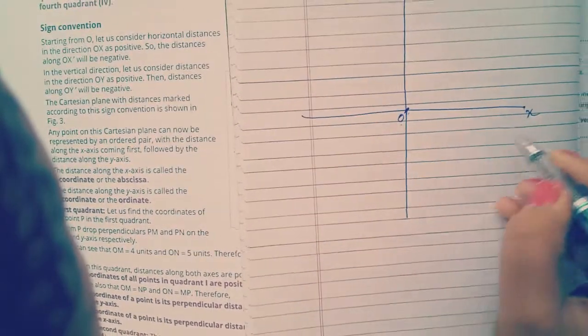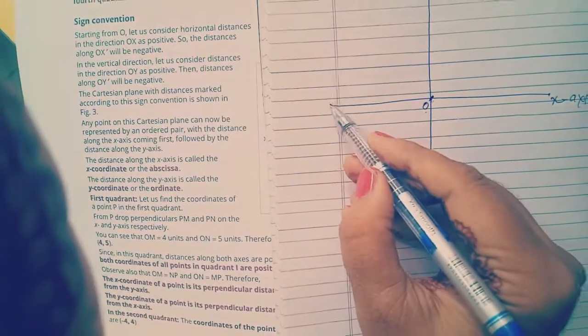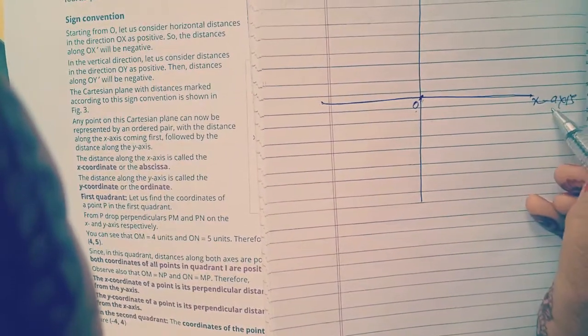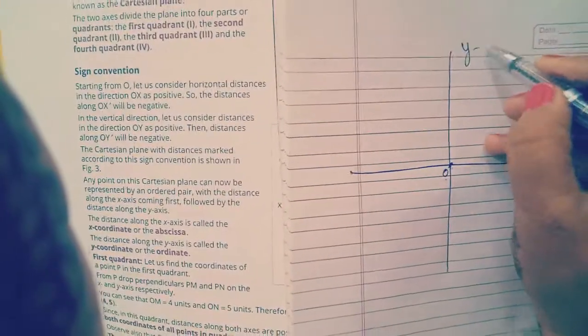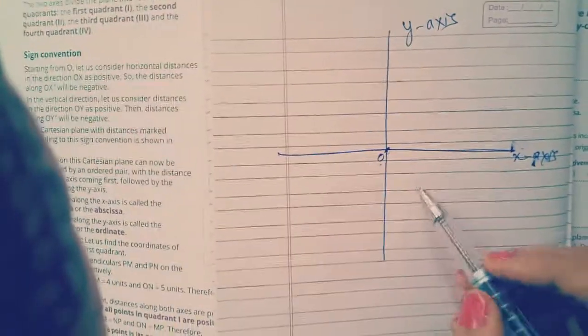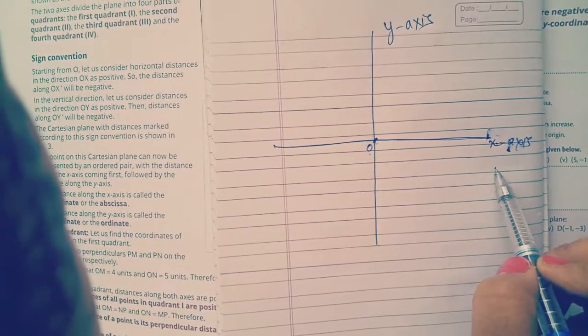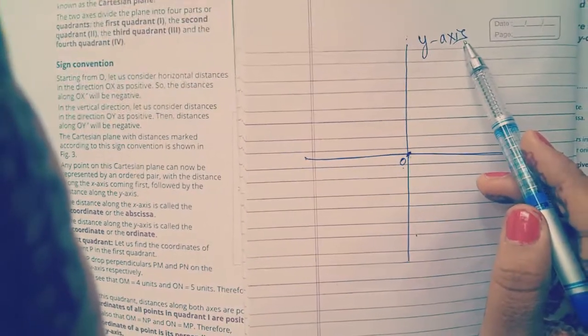So here we will write x-axis. This horizontal line is known as x-axis, and vertical line is known as y-axis. I think this is clear to you. This horizontal line is known as x-axis and vertical line is known as y-axis.